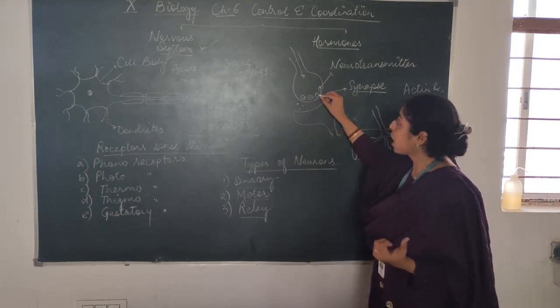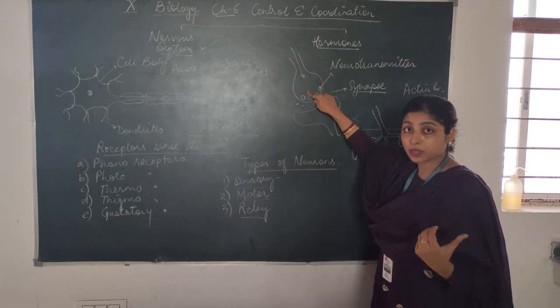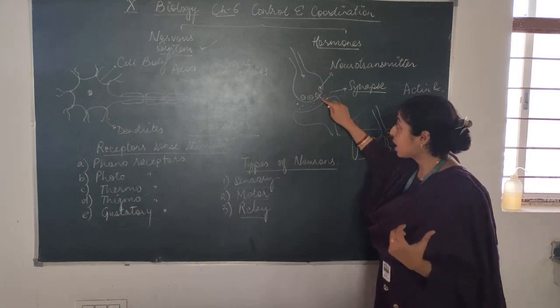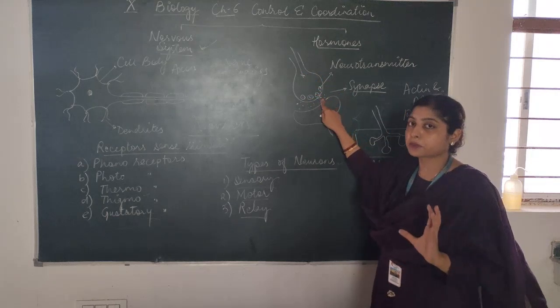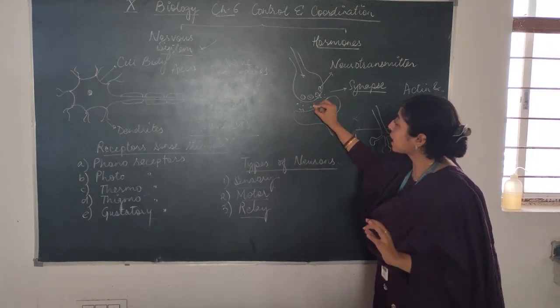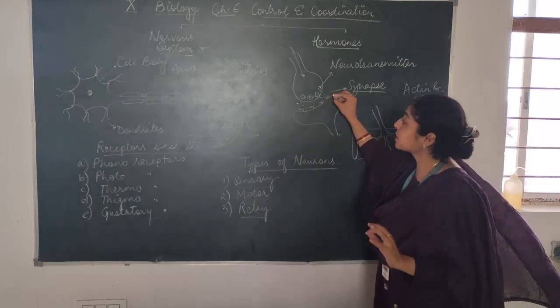These vesicles, upon the arrival of the signal, will burst and release the neurotransmitter in the synapse. Then here on the dendrite of the other neuron, there are specialized receptors.